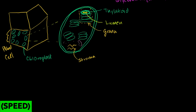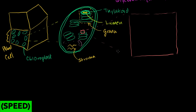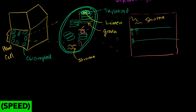Let's zoom in on one of these thylakoid membranes. The thylakoid membrane is actually a phospholipid bilayer — it has hydrophilic heads and hydrophobic tails. On the outside of the membrane you have the stroma, which fills the entire chloroplast, and the space inside the thylakoid is the lumen. This might look a little familiar when you think about mitochondria and the electron transport chain — what I'm going to describe is essentially an electron transport chain.